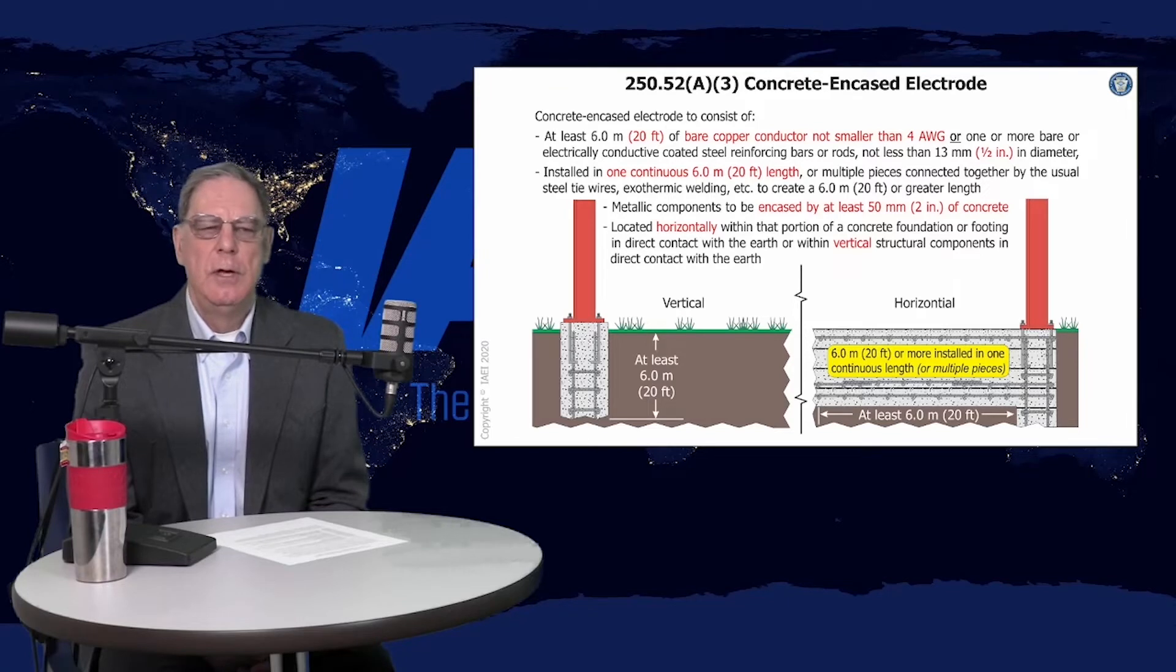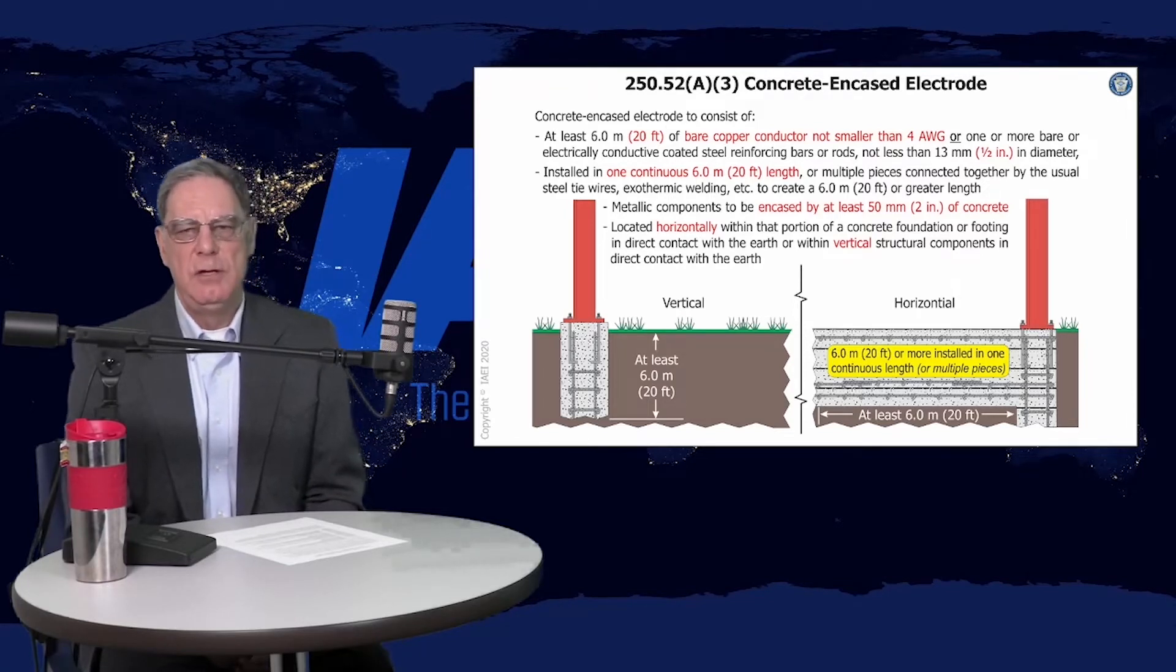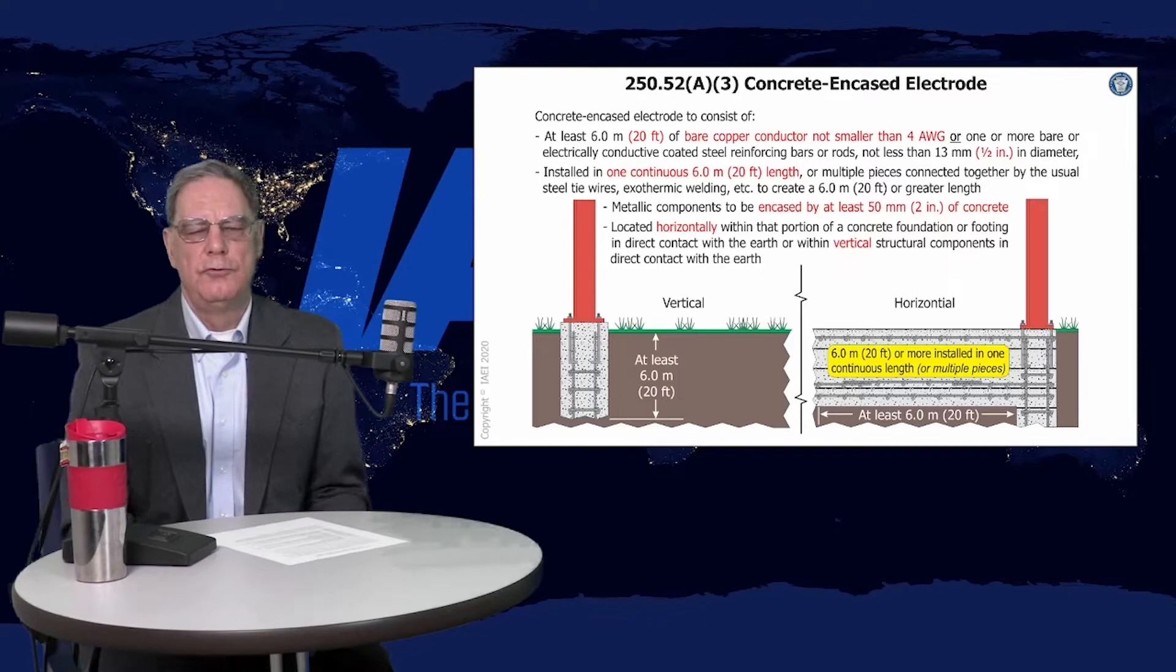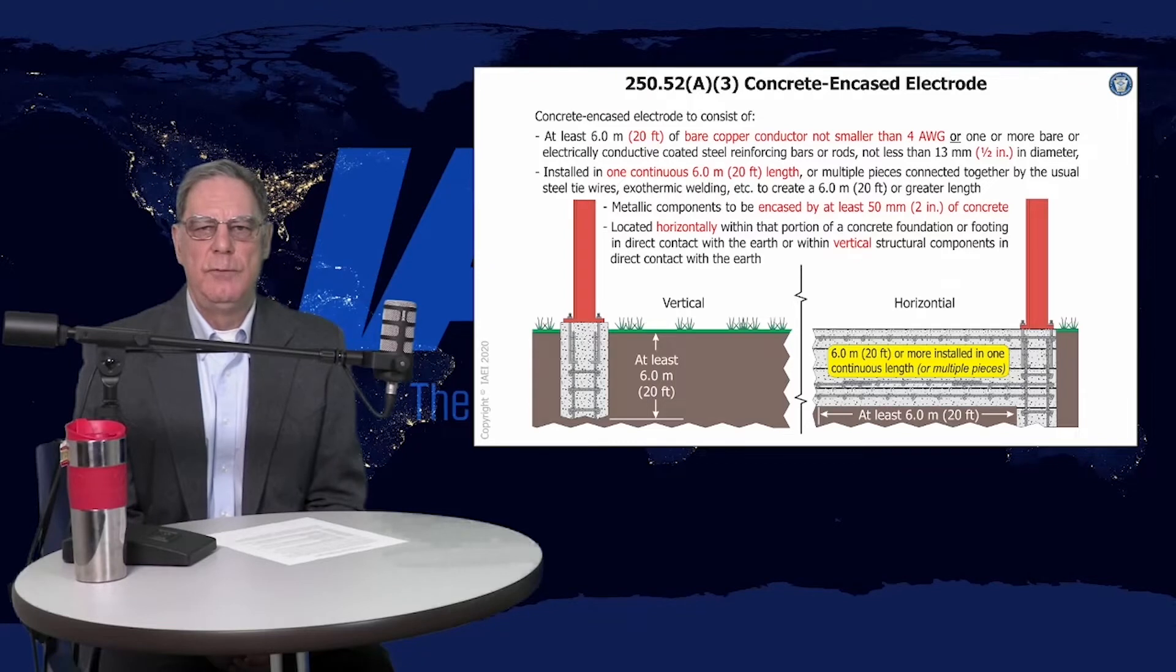As I said earlier, this is something that the concrete contractor installs, and the installation must meet the building code. The amount of overlap, the tie wires, and all that is controlled by building code. The electrical code just says if you have this building code item, this is what you're going to be using.